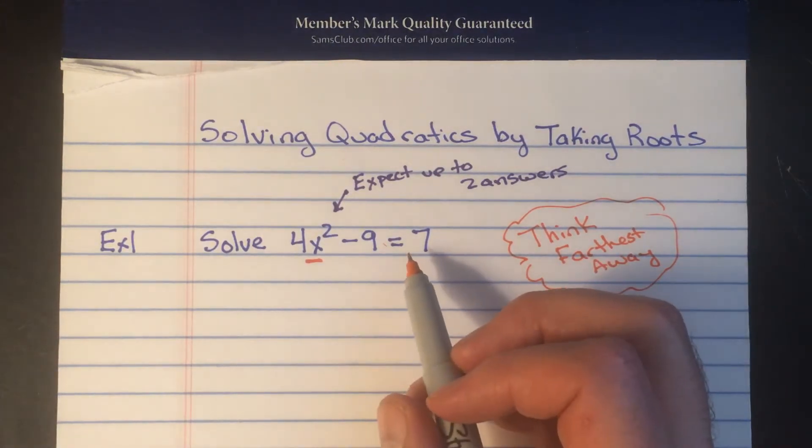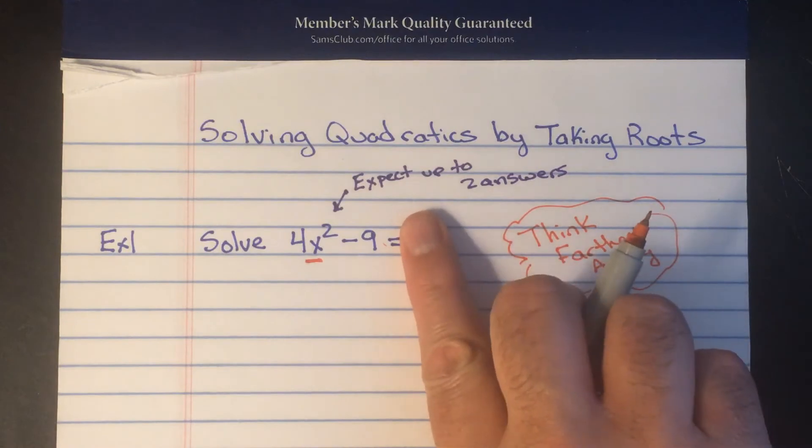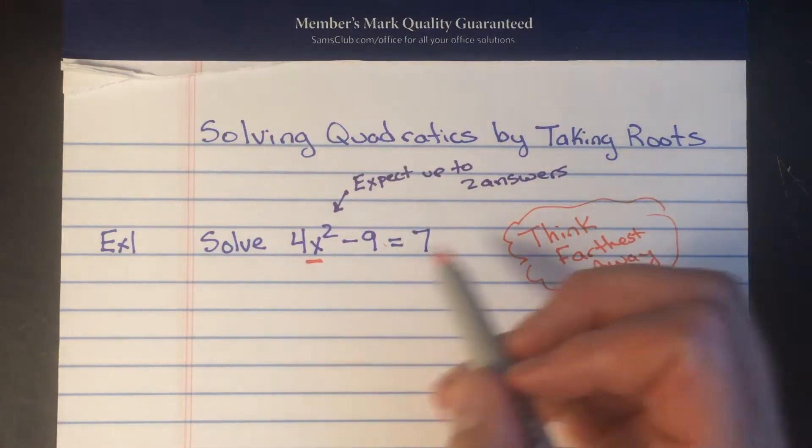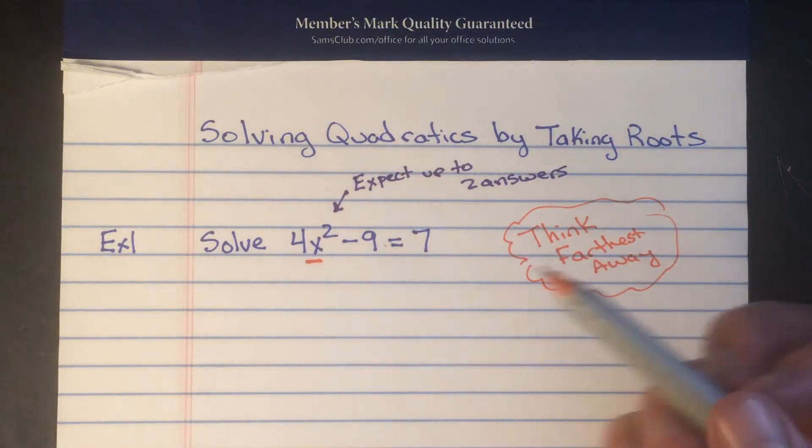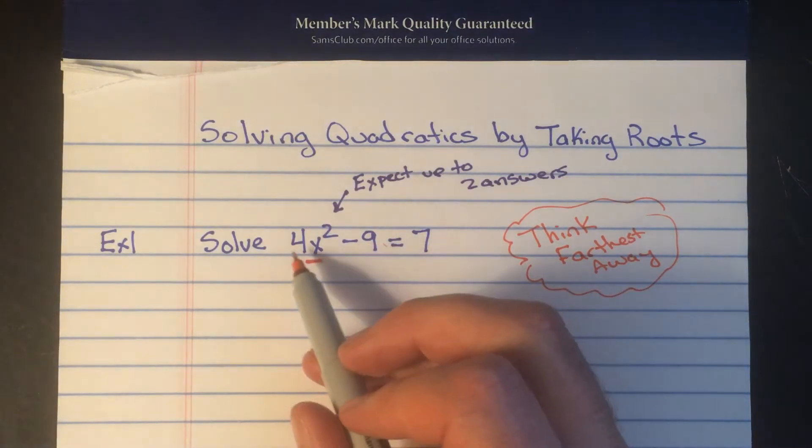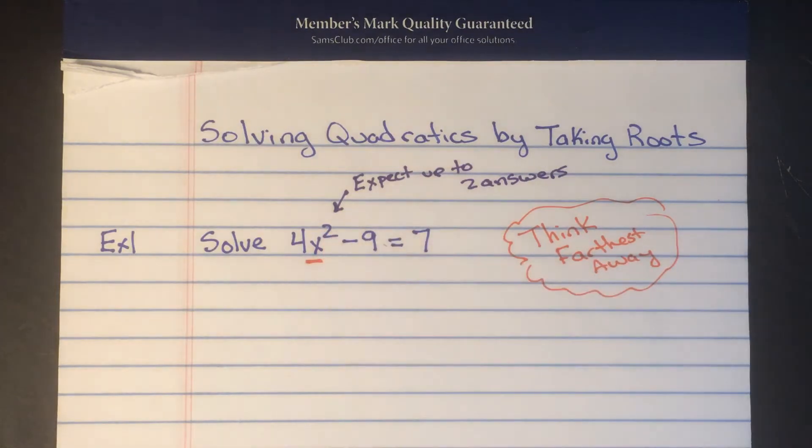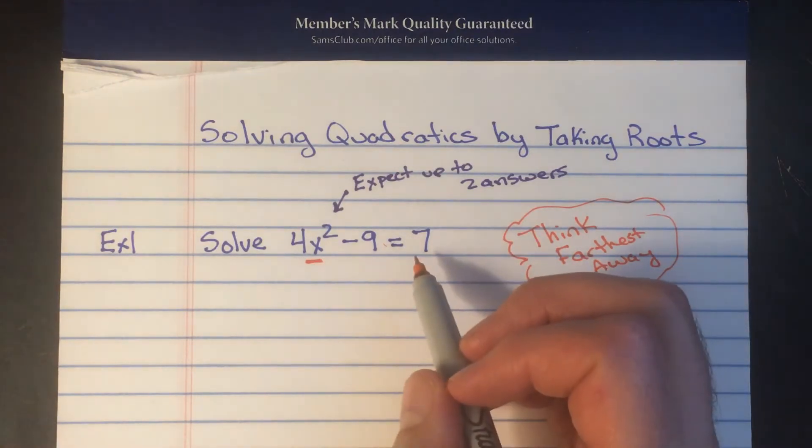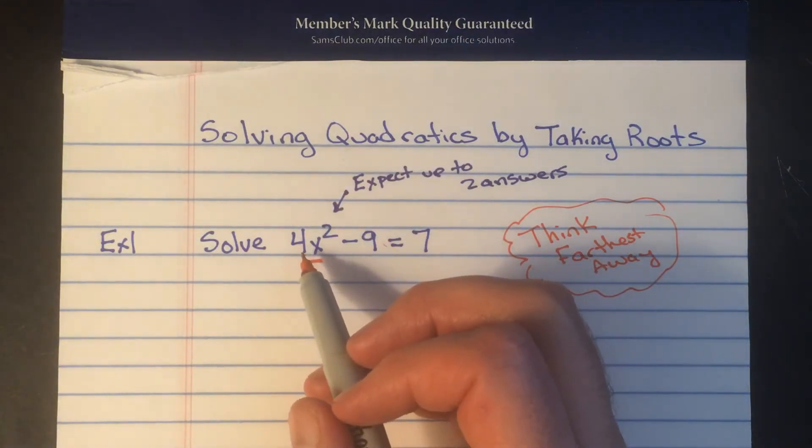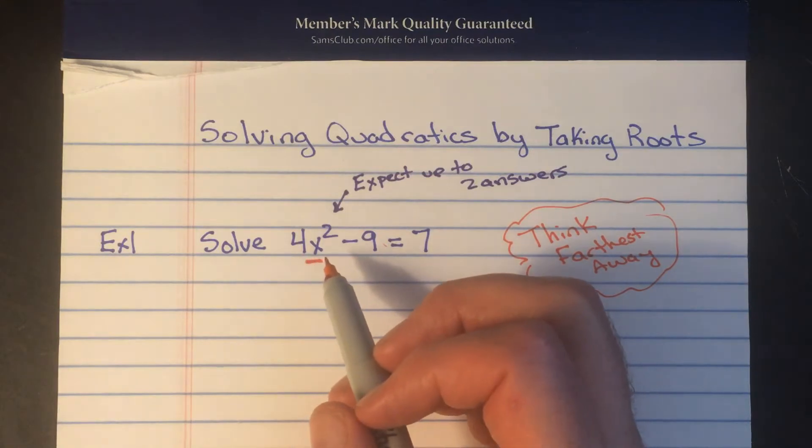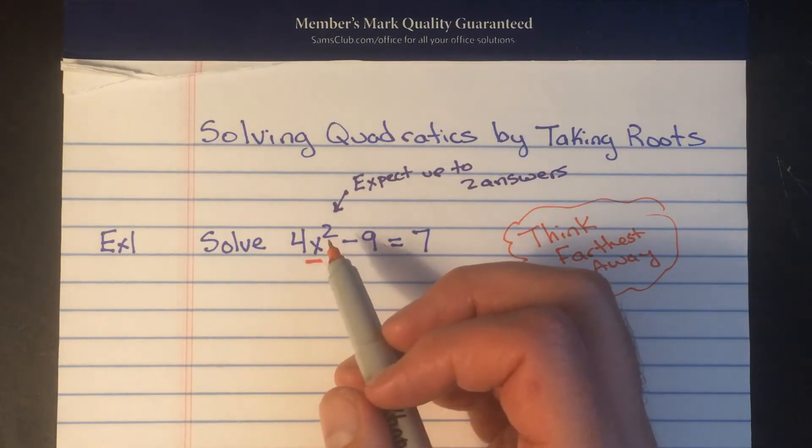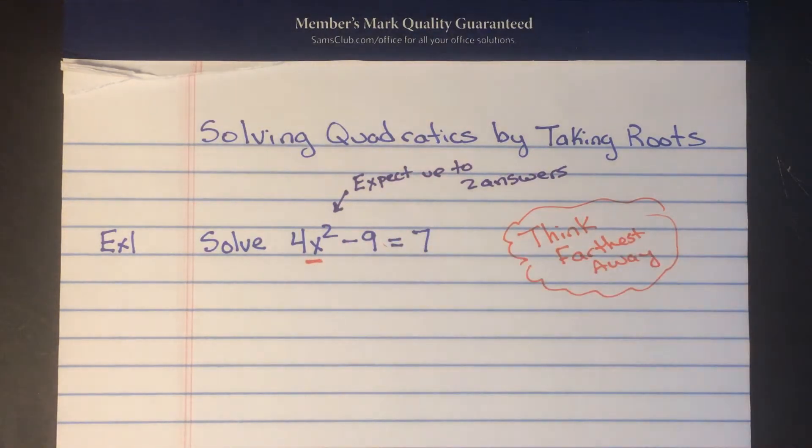So here the equal sign is right there so we don't care about anything past the equal sign. And we have three things bothering the x. There's the minus nine, there's the times four, but then there's also this to the second power squared. So we're gonna have to get rid of all three things. We know how to get rid of minus nines, we add nine. We know how to get rid of times fours, we divide by four. What we're gonna learn today is to get rid of a squared we can just take the square root of both sides and we can get an answer and get x by itself.